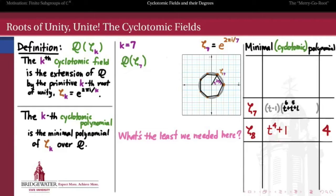We can do that by first factoring out a (t minus 1) from that polynomial and getting the remainder: t to the 6th plus t to the 5th plus t to the 4th plus t to the 3rd plus t squared plus t plus 1. Since we know that the first factor (t minus 1) has a root of 1 and not zeta_7, zeta_7 must be a root of the other factor, 1 plus t all the way up to t to the 6th.